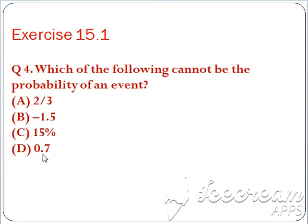Option D is 0.7. If you see 0.7, how do we get 0.7? It is 7/10 = 0.7, and 0.7 is also more than 0. We know that 0 ≤ P(E) ≤ 1. So it is in between 0 and 1. So this is correct.